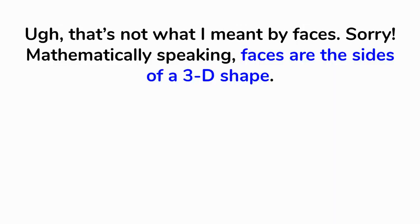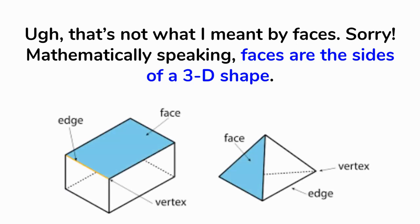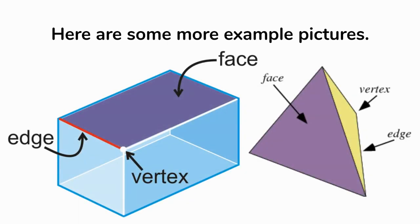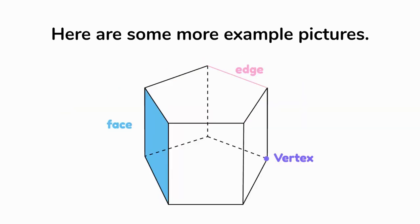That's not actually what I meant by faces. Mathematically speaking, when we talk about faces, faces are the sides of a 3D shape — not human faces. If you look at the picture, the faces have been highlighted in blue. These shapes have more than one face, and the face is the word for the side. There are also edges, and we're still using vertices — a vertex or vertice. The faces are the sides of a 3D shape.